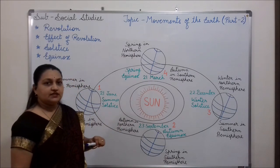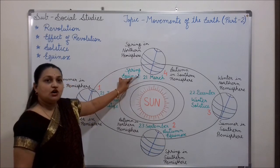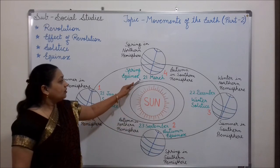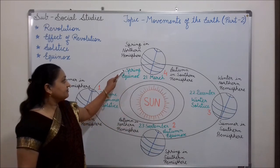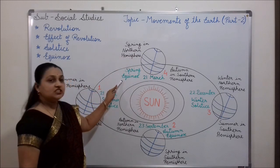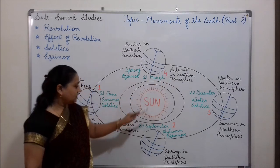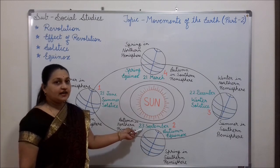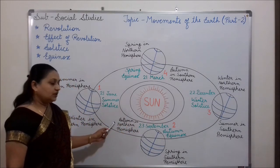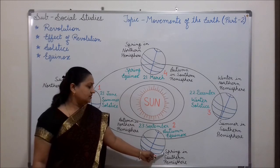There are two equinoxes in a year. The first falls on 21st March and the next on 23rd September. On 21st March, there is spring season in the northern hemisphere; it is called the spring equinox, while the southern hemisphere experiences autumn season. On 23rd September, the equinox occurs again, and on this day the northern hemisphere experiences autumn season whereas the southern hemisphere experiences spring season.